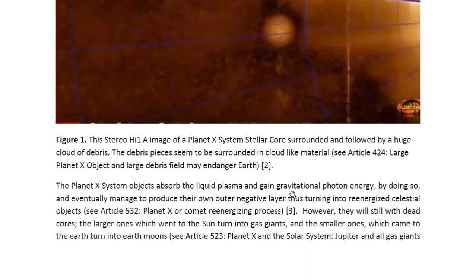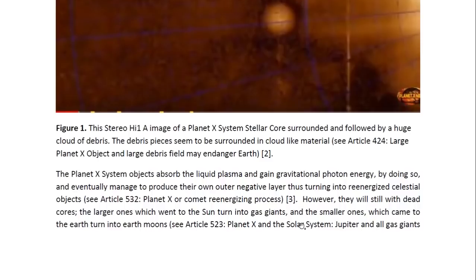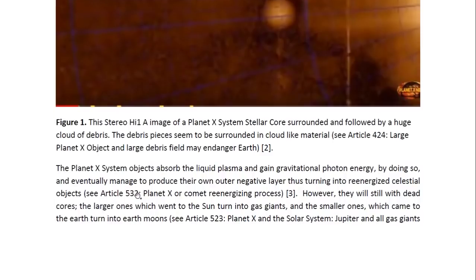The Planet X system objects absorb the liquid plasma and gain gravitational photon energy by doing so, and eventually manage to produce their own outer negative layer, thus turning into re-energized celestial objects. And you may look at Article 532 entitled Planet X or Comet Re-Energizing Process.